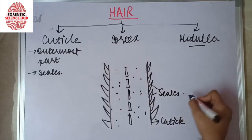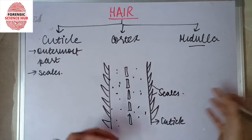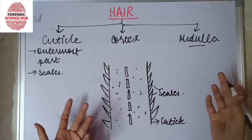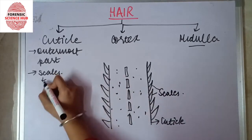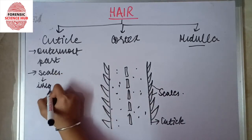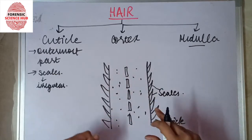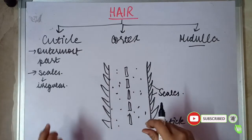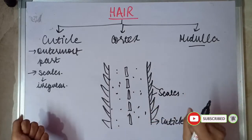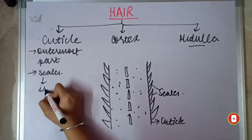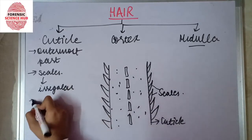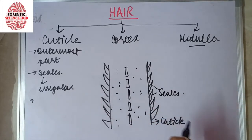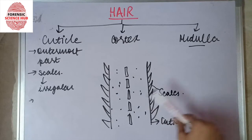The cuticle is the outermost part and it contains scales on its surface. These scales can tell us what kind of species the hair belongs to. They are irregular in nature and can have different shapes — for example, dog-bone shaped or donut shaped. In rodents such as rats, they are spatula shaped. On the basis of scale shape, we can determine what kind of animal the hair is from, and whether it is human hair or not.